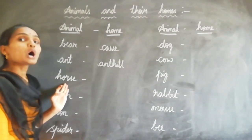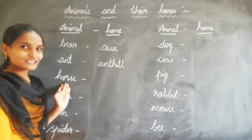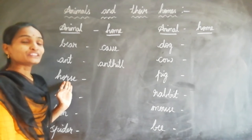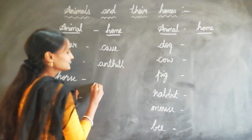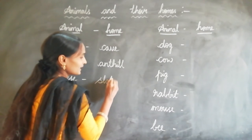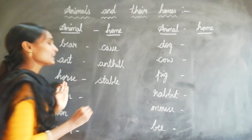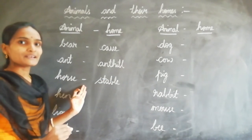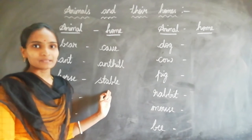Next, horse. Do you know horse, children? The home of the horse is called a stable. Horse lives in a stable.